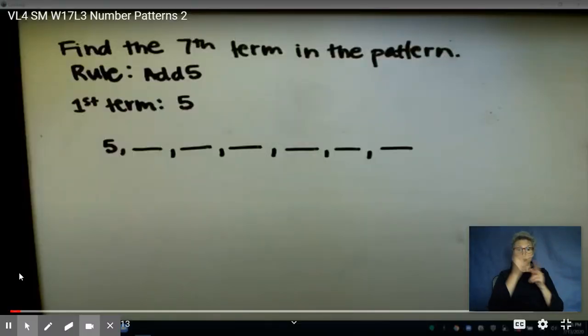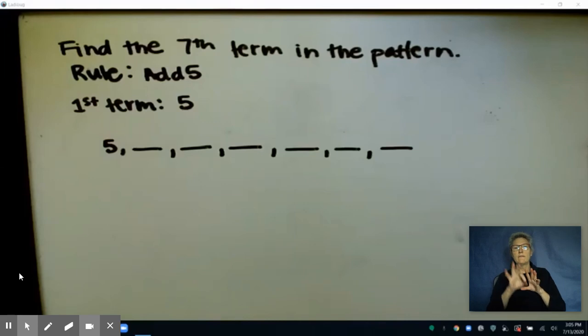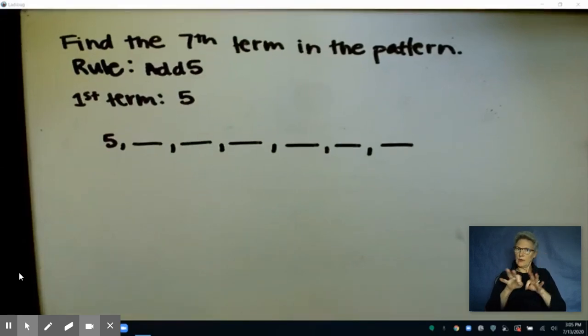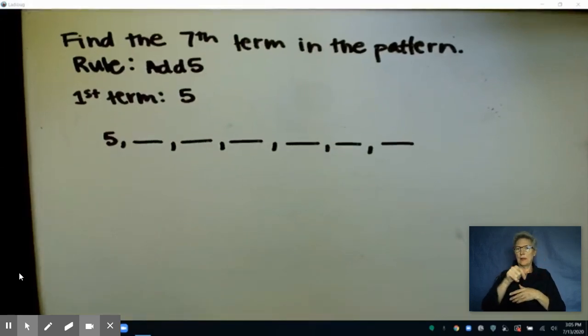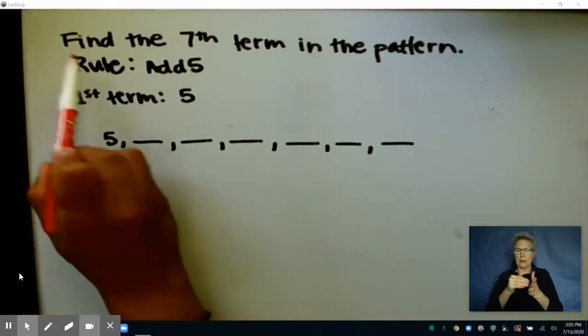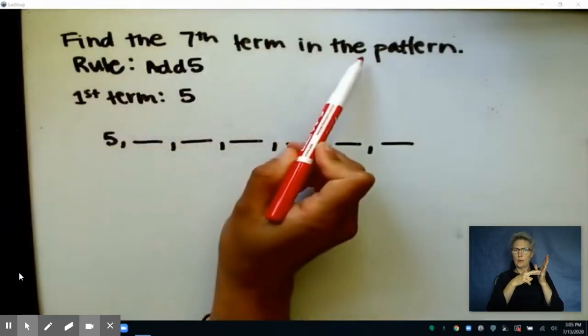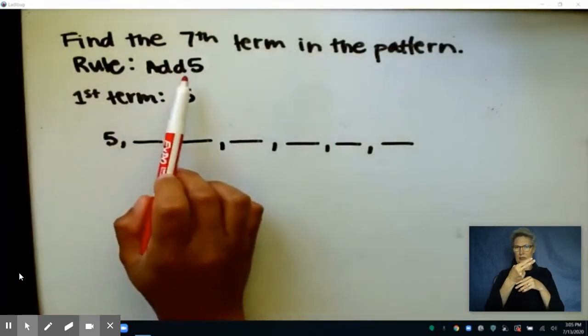Another strategy that we can use is to find and describe a pattern. So let's take a look at this rule here. The problem asks us to find the seventh term in the pattern, and the rule is to add 5.